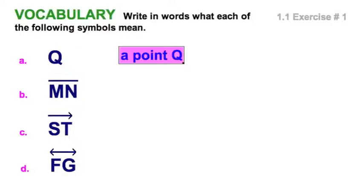The capital letter Q simply means a point Q, and we're going to draw it like this. As we remember, that's one of our undefined terms. It could be anywhere out there. We say it's undefined because it just exists. I can't define it in terms of something else.